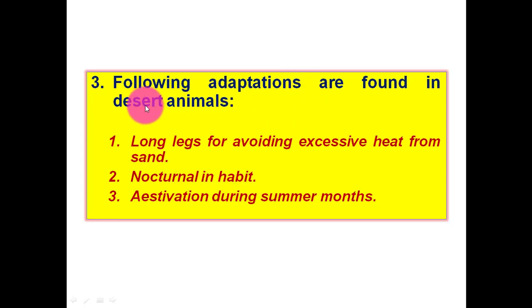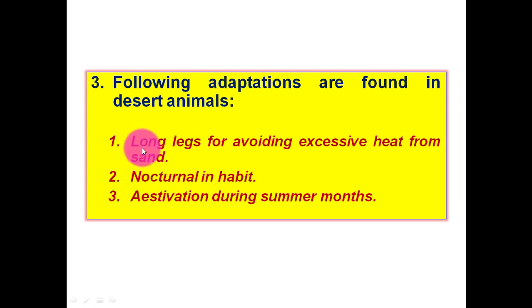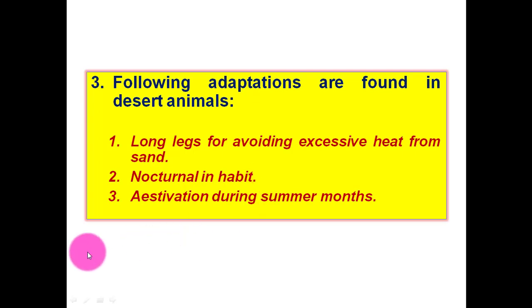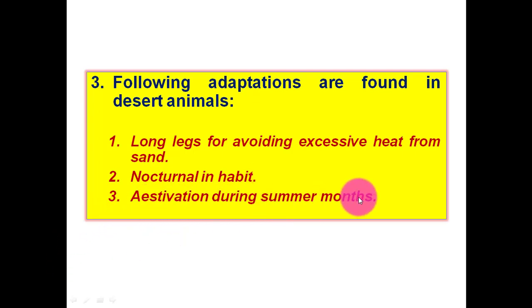Next, the following adaptations are found in desert animals: long legs for avoiding excessive heat from sand, nocturnal habits, and aestivation — that is, dormancy during summer months.